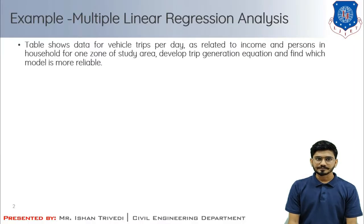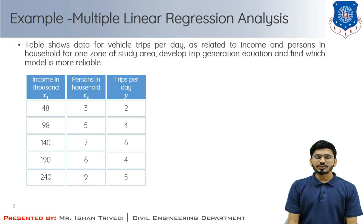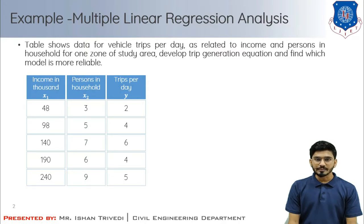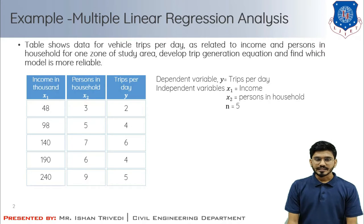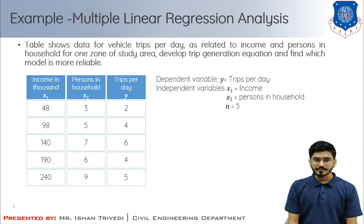Let us have a problem statement. The table shows data for vehicular trips per day as related to income and persons in the household for one zone of the study area. Develop the trip generation equation and find which model is more reliable. The dependent variable y denotes trips per day, and there are two independent variables: x1 is income in thousands, and x2 is persons in household. The number of samples is 5.